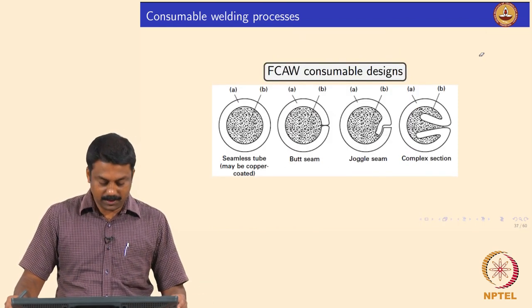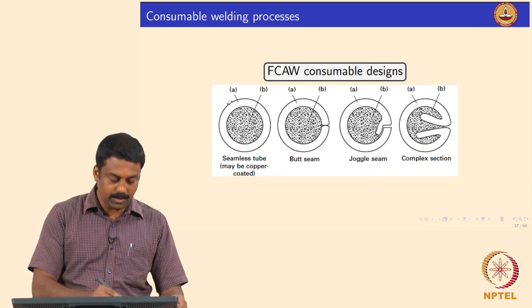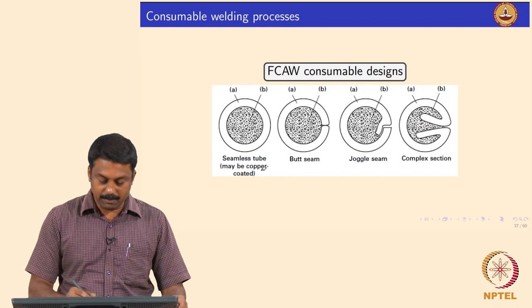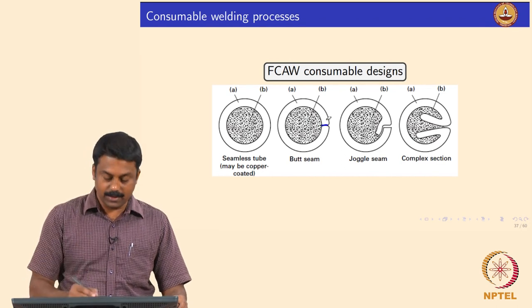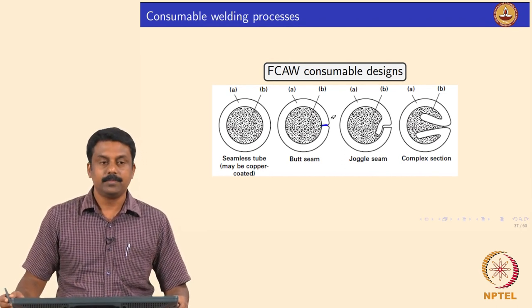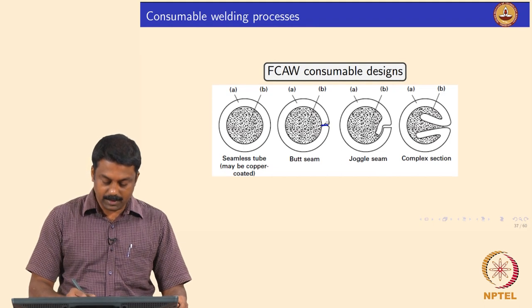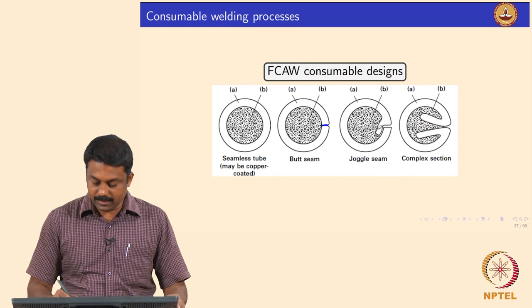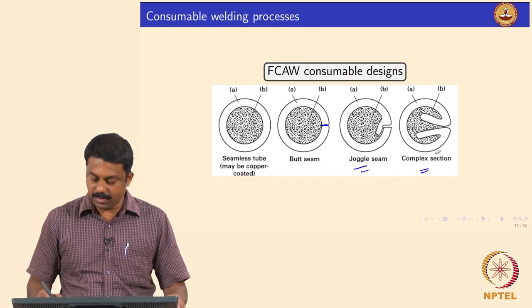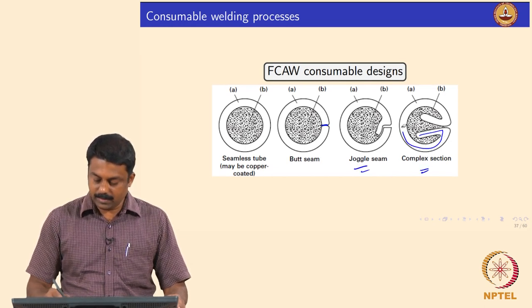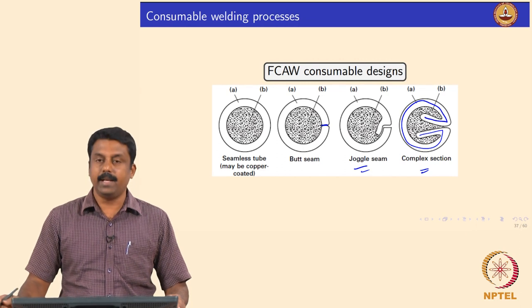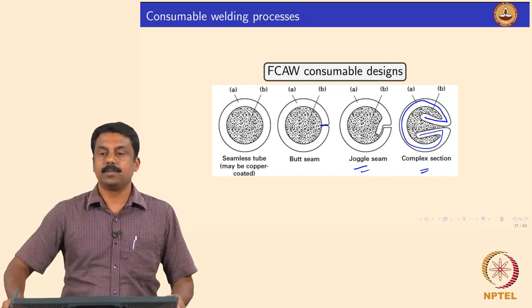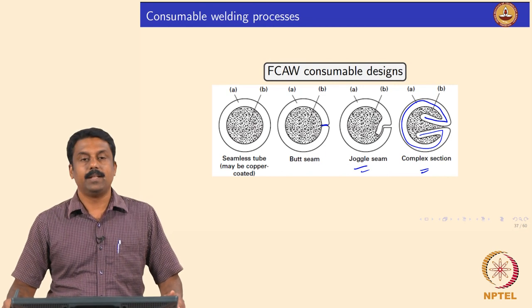A typical cross-section can be a seamless tube, or you can have a butt seam — the electrode I gave you is a butt-seamed electrode. You can also have a varying joggle seam on a more complex section, which allows you to increase the amount of alloy metal.